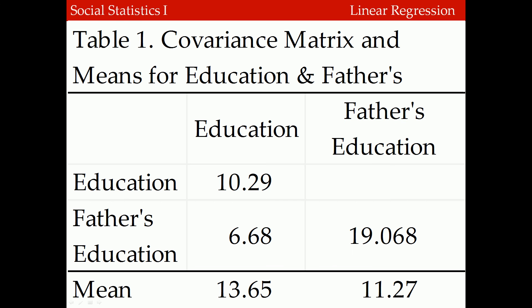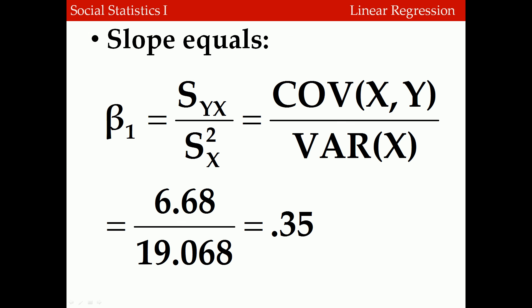This table shows a variance-covariance matrix of education and father's education. The variance for education is 10.29, and for father's education is 19.68. The covariance of education and father's education is 6.68. The mean for education is 13.65, and for father's education is 11.27. To calculate the slope, we divide the covariance, 6.68, by the variance of father's education, 19.068, giving a slope of 0.35.